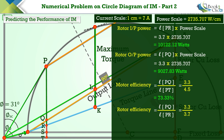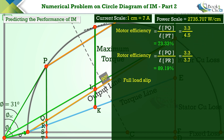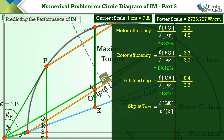To calculate the slip, divide the length of line QR by the length of line PR. The length of QR is 0.4 centimeters and PR is 3.7 centimeters, giving a slip at full load of 10.8%. To calculate the slip at maximum torque, divide the length of line LK by the length of line JK. With LK at 1.1 centimeters and JK at 4.8 centimeters, the slip at maximum torque is 22.91%.